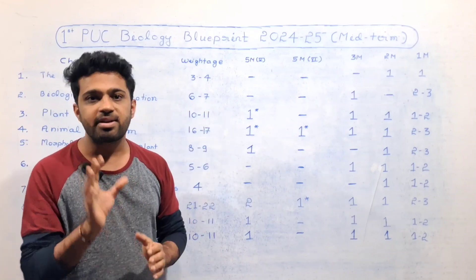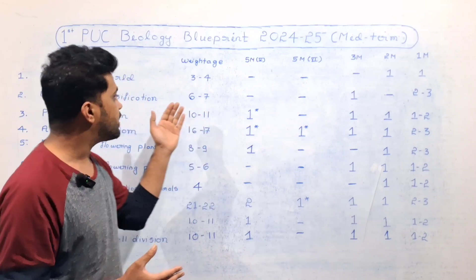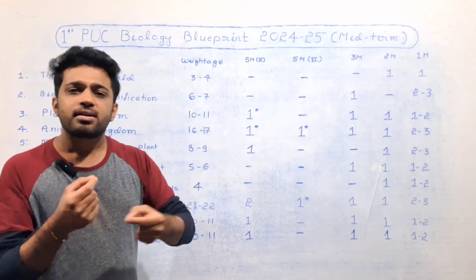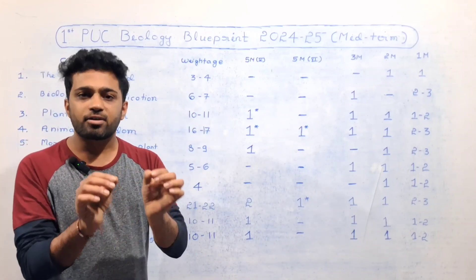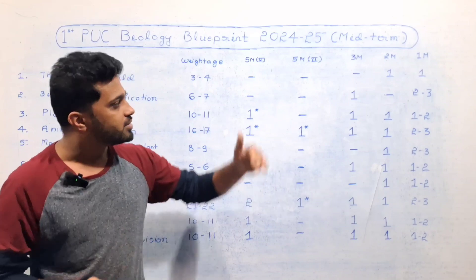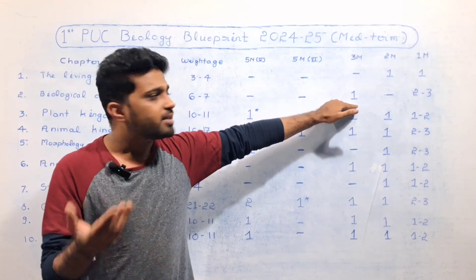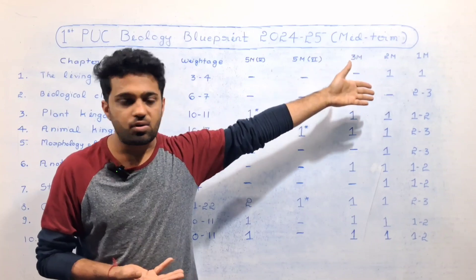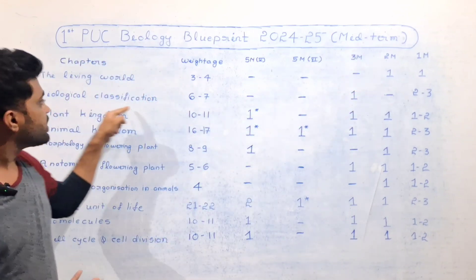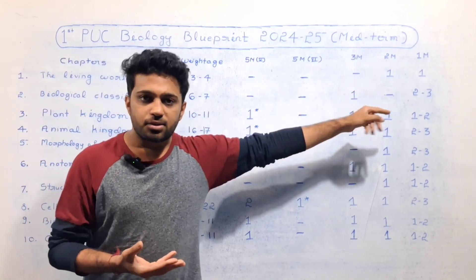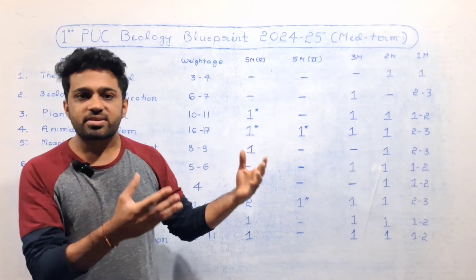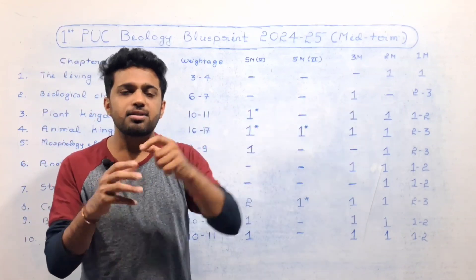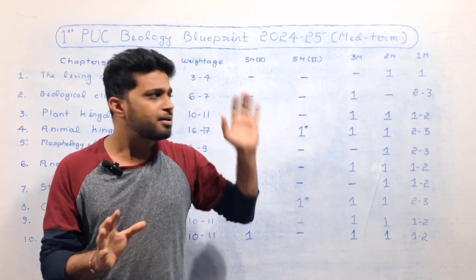Each chapter has 2-mark questions and 1-mark questions. Focus and practice. Next chapter: Biological Classification — 6 to 7 marks allowed. Short answer related questions practice — 3-mark questions, 2-mark questions, 3-mark questions. Biological Classification — so practice PYQs. In this chapter there are 10 questions, so if you solve them you will score well.